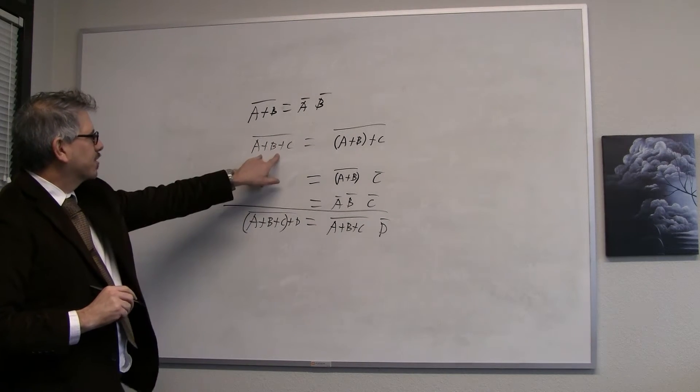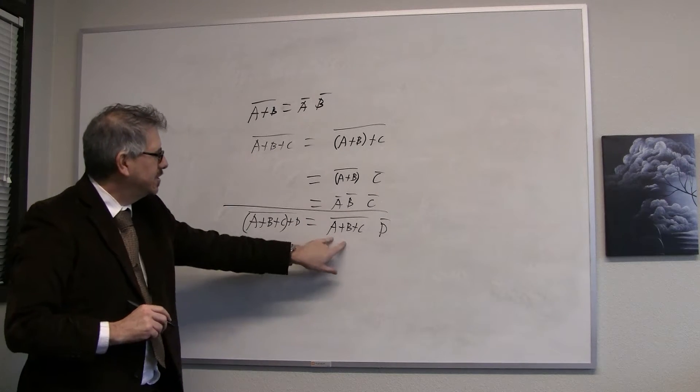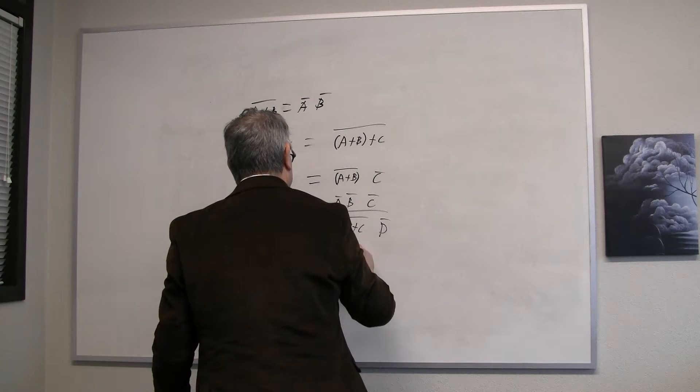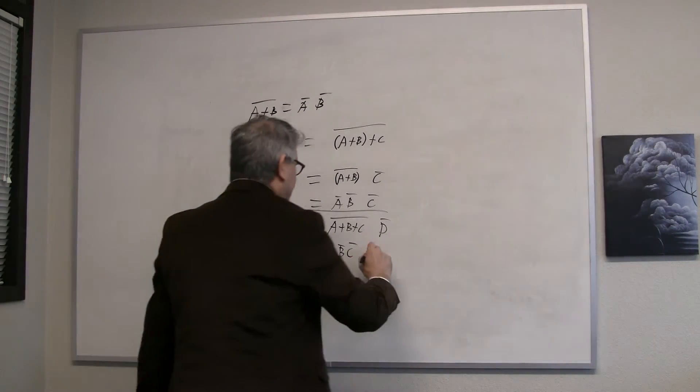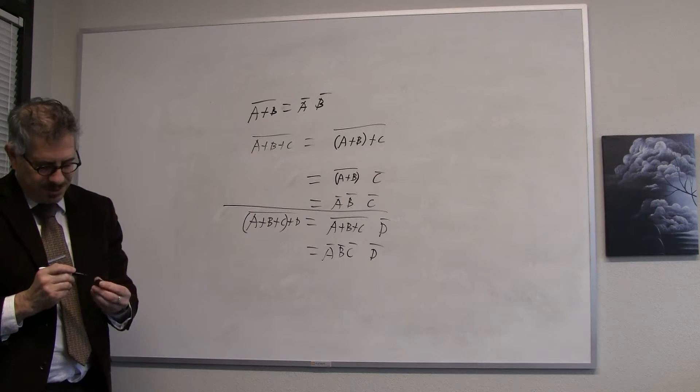And now our three variable version of De Morgan's tells us that the complement of A or B or C is just A bar B bar C bar, and we AND that with D bar. And now we've got the four variable version of De Morgan's.